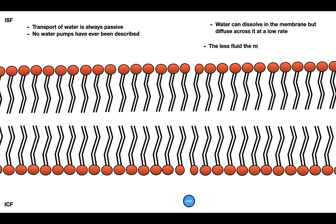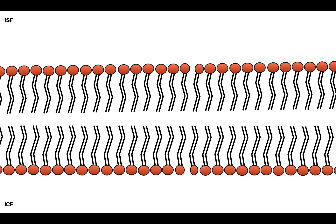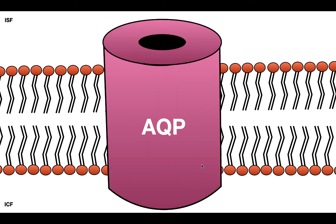Water's permeability inside the plasma membrane is going to be determined by how fluid the membrane is. The less fluid it is, the lower the water permeability. The main way water increases its rate of transport across the cell membrane is through the pore protein called aquaporin. Aquaporin is a pore protein that allows water to move across it at a fast rate — a tunnel that allows water to move across the membrane very quickly, either out of the cell or into the cell.